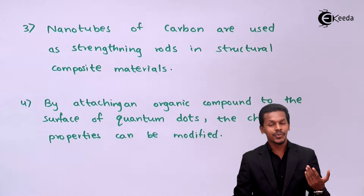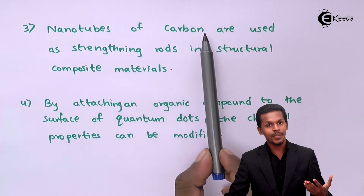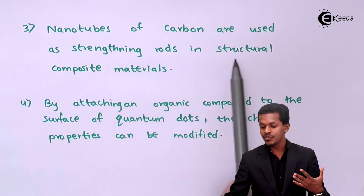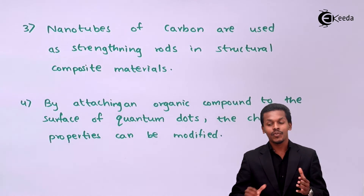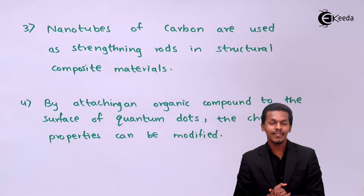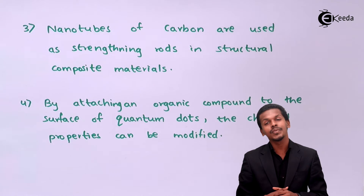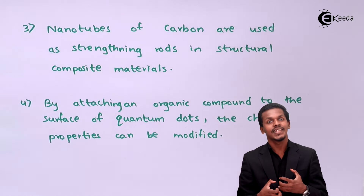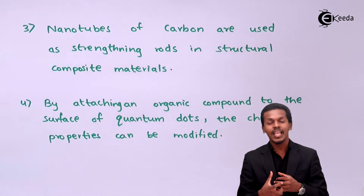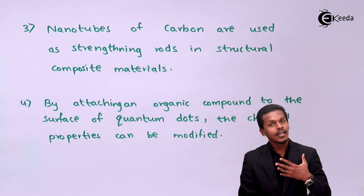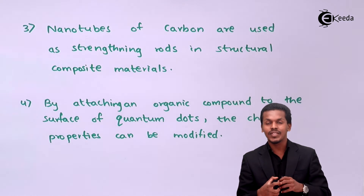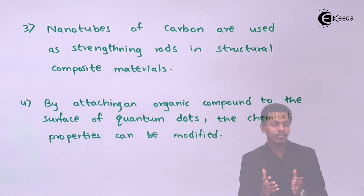The next point is that nanotubes of carbon are used as strengthening rods in structural composite materials. These carbon nanotubes have various properties we discussed in our previous lecture. Most notably, they have very good strength, and therefore when used in preparing any kind of material, carbon nanotubes can provide proper strength to that material.